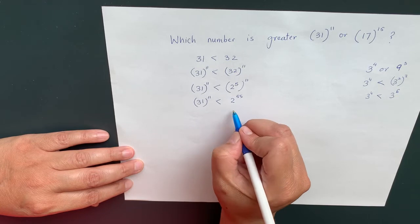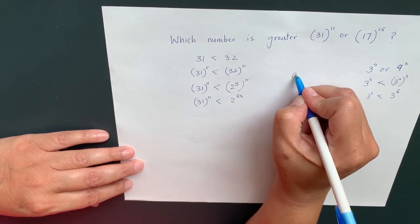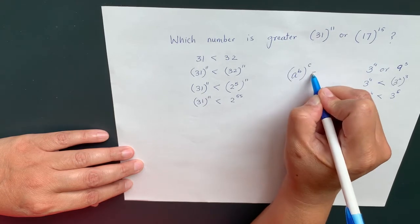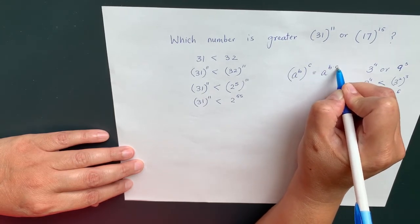This is one of the properties of exponent where we say a to the power of b to the whole power of c is equal to a to the power of b times c.